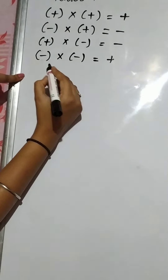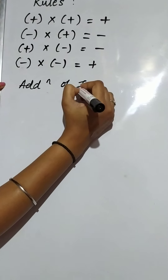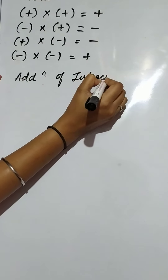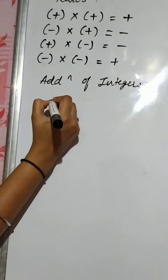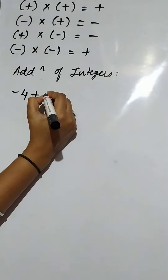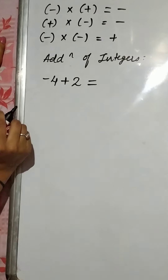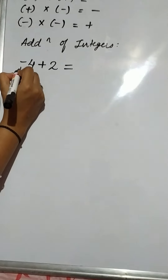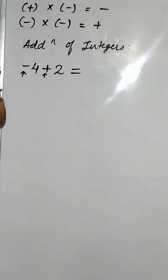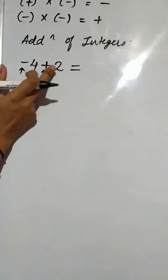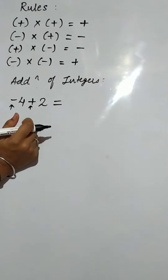So we will quickly revise the addition of integers. We will take one example: minus 4 plus 2. In this, we will first look at our signs. Minus plus — both the signs are different, so minus plus gives minus.